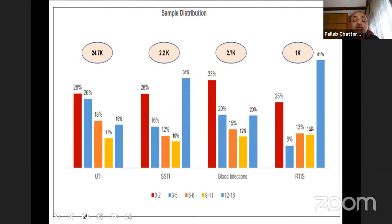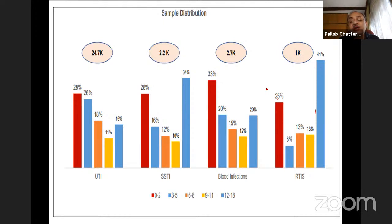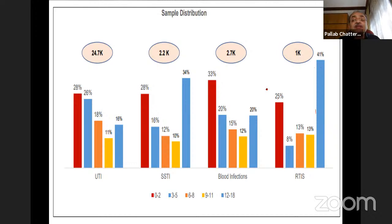The sample distribution covered age groups 0-2 years, 3-5, 6-8, 9-11, and 12-18 years, with uniform distribution. Overall, amoxicillin alone still remains the drug of choice for first-line treatment of respiratory infections. If amoxicillin alone is not available, co-amoxiclav can be used, but amoxicillin alone is preferred, particularly for respiratory infections.